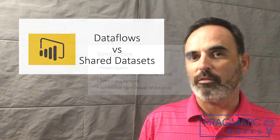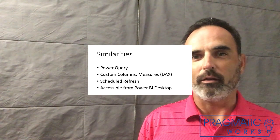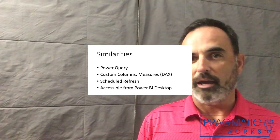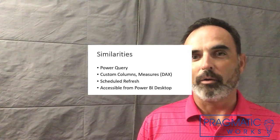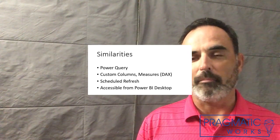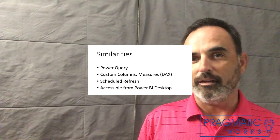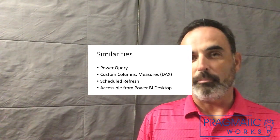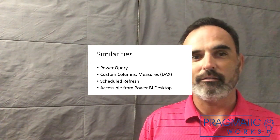I want to do a review of how data flows and data sets are the same, or things that they have in common. They're both based on Power Query — both are created with Power Query. Accessing different types of data, doing mashups of data from different sources, merging data together, combining files — all that good stuff you can do in Power Query is available in both a data set and a data flow. And once I have my data pulled in, I can create custom columns or measures using DAX, and I can do that in both cases.